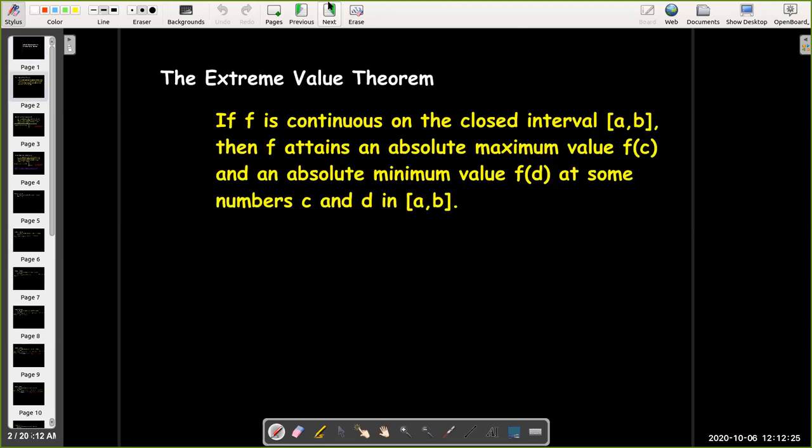Let's look at the statement. If f is continuous on the closed interval [a, b], then f attains an absolute maximum f(c) and an absolute minimum f(d) at some numbers c and d in [a, b].